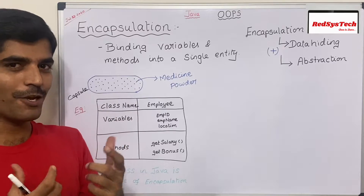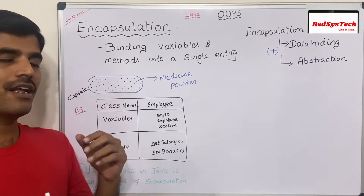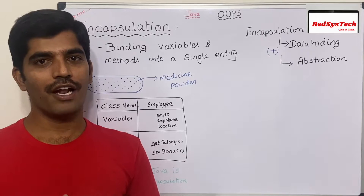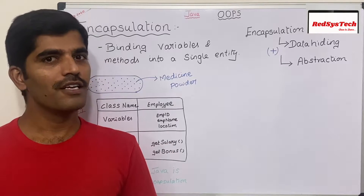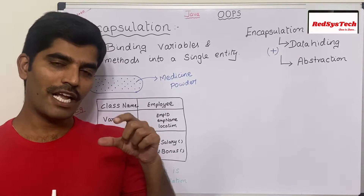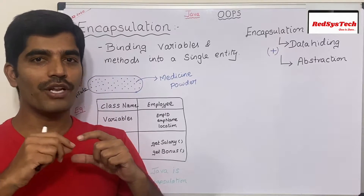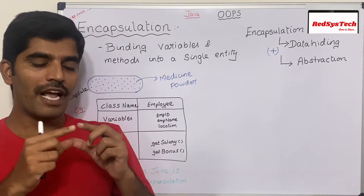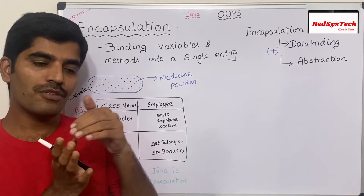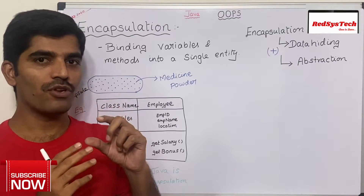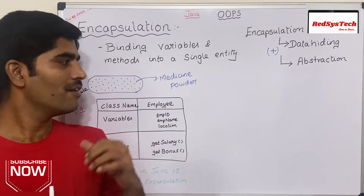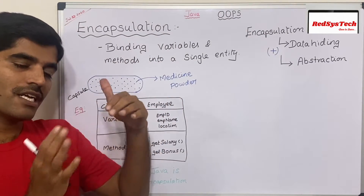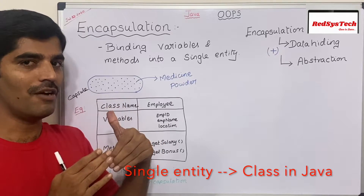Let's start with a basic example. Let's say you are going to the hospital, you are not feeling well, and the doctor is giving you a capsule. What does the capsule contain? It contains some important medicine powder inside it. There are many medicine powders inside it, but the capsule is encapsulating everything into one single capsule or tablet. That is why we call the process of binding variables and methods into a single entity encapsulation in Java.